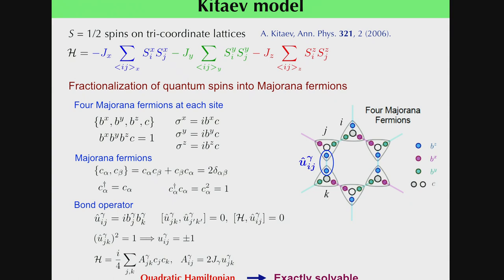A remarkable feature of this model is that each spin can be represented by Majorana fermions. For example, we represent quantum spins by four kinds of Majorana fermions: b^x, b^y, b^z, and c, under a constraint.